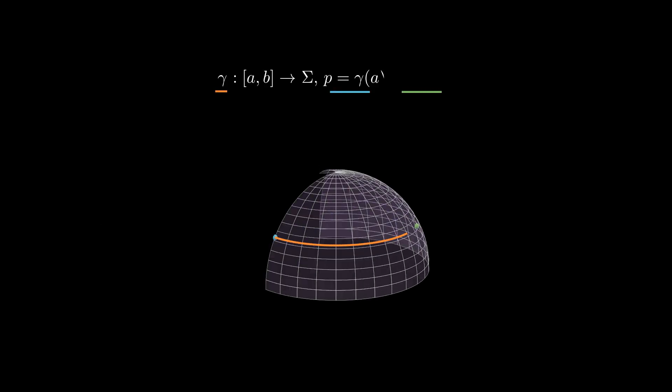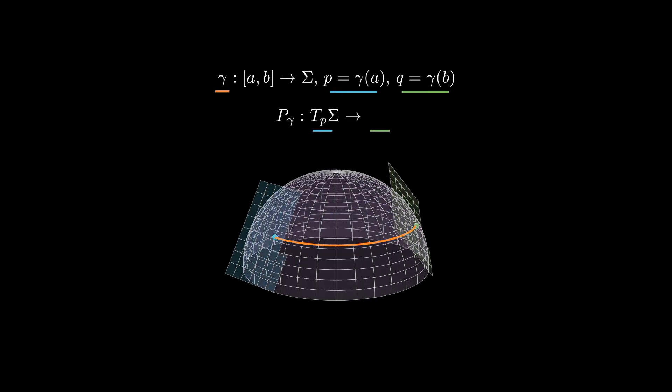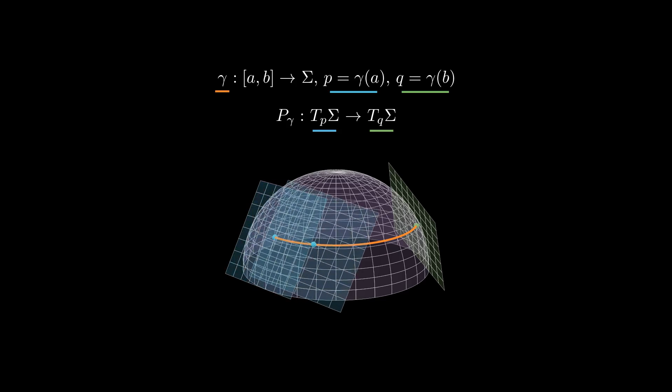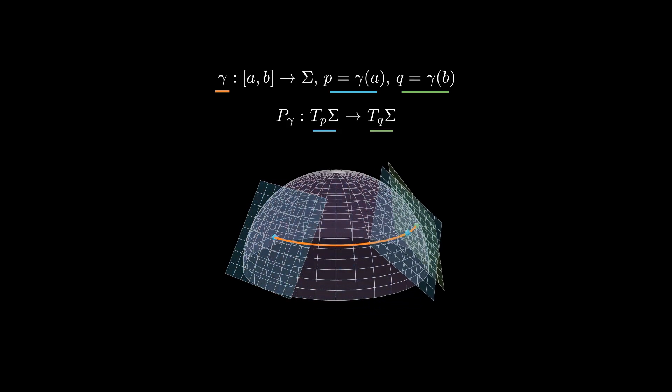When we have a surface sigma and a smooth curve gamma in our surface, the parallel transport along gamma is a linear map from the tangent plane to sigma at the initial point of the curve to the tangent plane at the final point of the curve. It is obtained by sliding such tangent plane along the curve with as little rotation as possible.